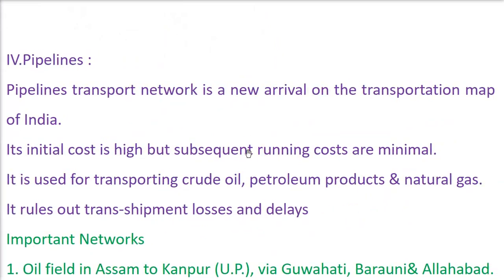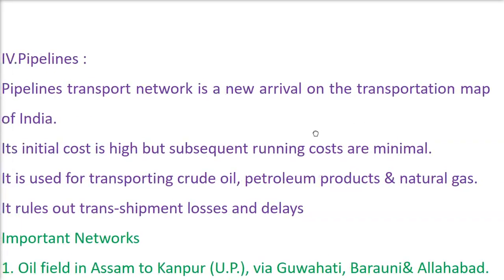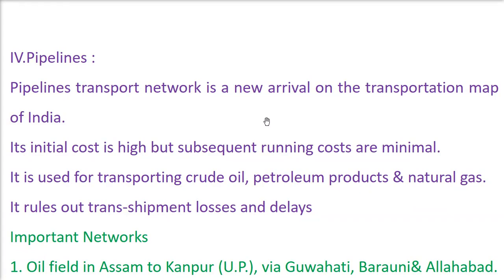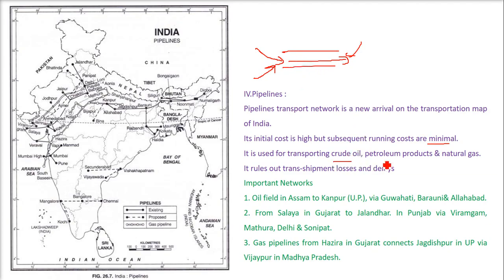Pipelines are a new addition to India's transportation network. Generally we talk about road, rail, and airways, but pipelines are fixed infrastructure. The content transported — gas, or even solids converted to liquid form — moves from the place of production to refinement or use. The initial cost of laying a pipeline is quite high, but once established, running costs are very low — only maintenance costs remain. Pipelines are used for transporting crude oil, petroleum products, and natural gas.